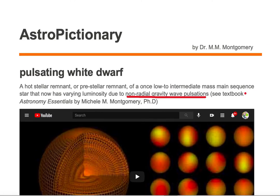And that is an example of a pulsating white dwarf, a hot stellar remnant or pre-stellar remnant of a once low to intermediate mass main sequence star that now has varying luminosity due to non-radial gravity wave pulsations.